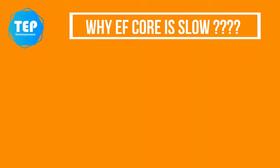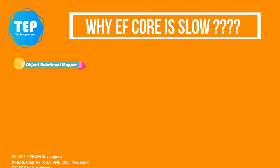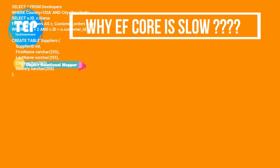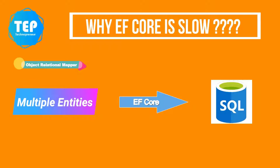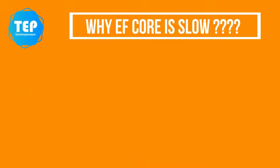Now let's quickly have a look at why EF Core performs slow for bulk data. EF Core is an object-relational mapper and is used as a bridge between an ASP.NET Core application and its database. Thanks to EF Core, there's no need to write complex SQL queries for database-related operations. Instead, developers can easily perform all database CRUD operations in C#. When multiple entities are saved using EF Core, it doesn't save them in a single SQL session; instead, it takes multiple round trips to the database, which increases the overall time for the data saving process.